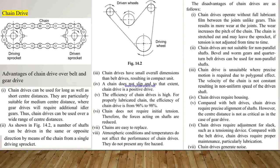Chain drive is intermediate between belt and gear drives, and it has some advantages over belt and gear drives. Chain drives can be used for long as well as short center distances, and are particularly suitable for medium center distances where gear drives would require additional idler gears. As shown in figure 14.2, a number of shafts can be driven in the same or opposite direction from a single driving sprocket. Chain drives also have smaller overall dimensions than belt drives, resulting in a compact unit.